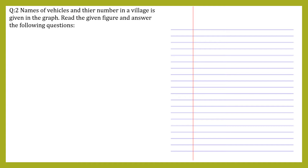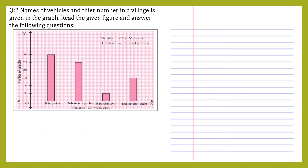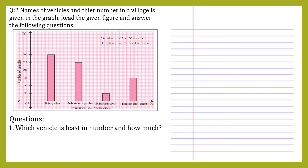Question number two: names of vehicles and their number in a village is given in the graph. Read the given figure and answer the following questions. Names of vehicles are given on the x-axis and their number in the village is given on the y-axis. The scale considered is one centimeter equals to five vehicles.